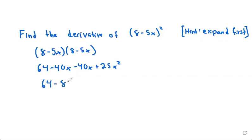minus 80x plus 25x². Now that we have expanded this into polynomial form, we can take the derivative using the power rule.